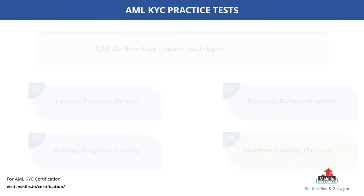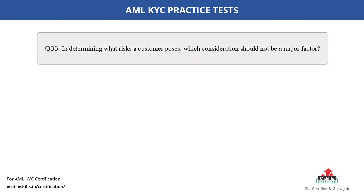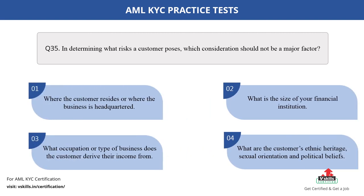Question number 35. In determining what risks a customer poses, which consideration should not be a major factor? The options are: A. Where the customer resides or where the business is headquartered; B. What is the size of your financial institution?; C. What occupation or type of business does the customer derive their income from?; D. What are the customer's ethnic heritage, sexual orientation and political beliefs? The correct answer is option D.